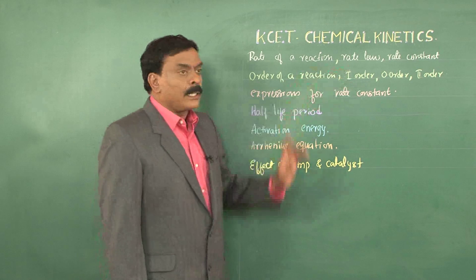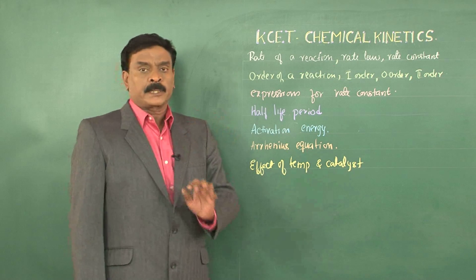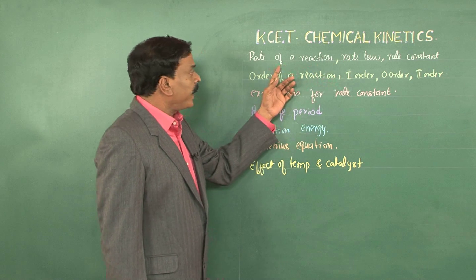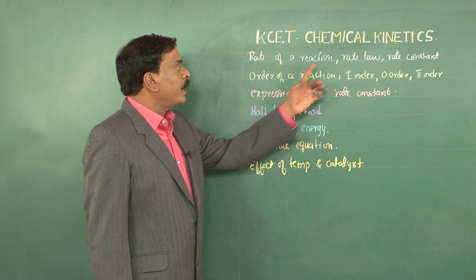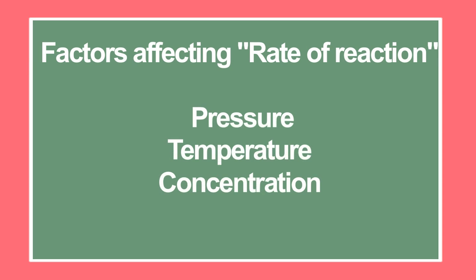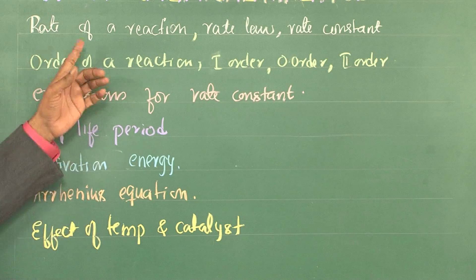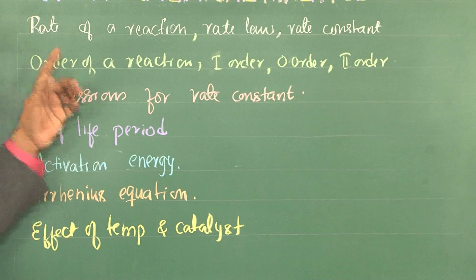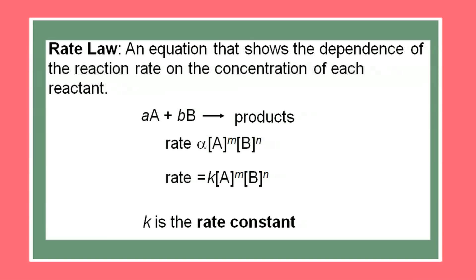Coming to the rate law, it is a mathematical expression which relates the rate of a reaction to the concentrations of the reactants. The factors which affect the rate of a reaction are pressure, temperature, and concentration. The rate law relates the rate of a reaction to the concentrations of the reactants at a given temperature.